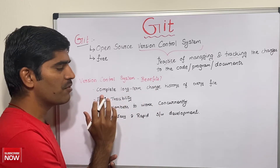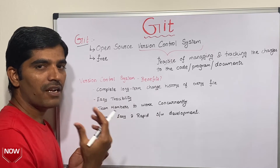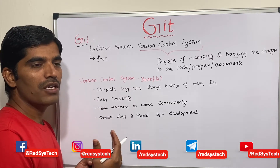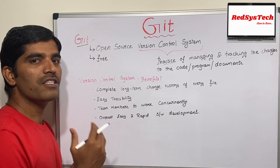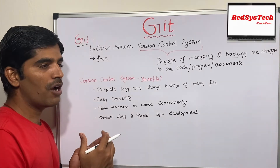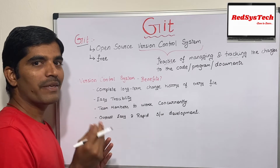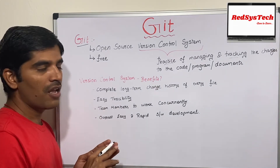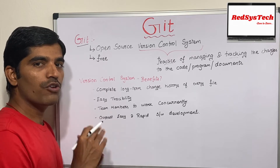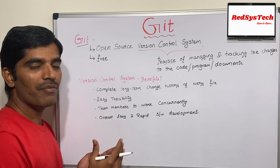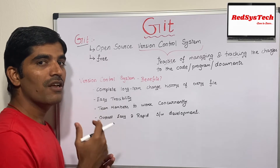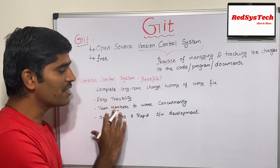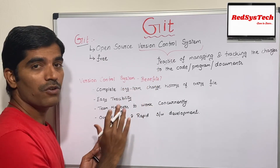The second benefit is easy traceability. If an error occurs in production or there is an issue in your code, you can trace which specific change is causing the problem. For example, if you have working code and you make two changes and push to production and it fails, you can identify which of those two changes is actually creating the problem.